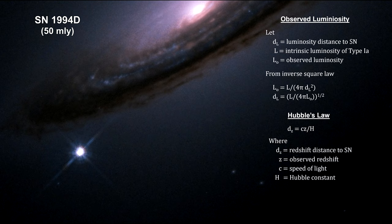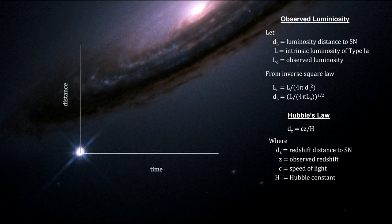Here's how it works. First, we measure the luminosity of a distant type Ia supernova like SN1994D and measure its redshift. Then we map the distance between us and the supernova over time.